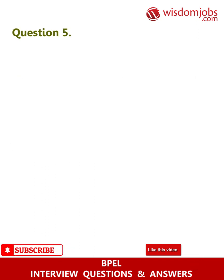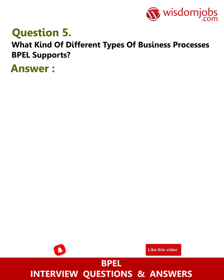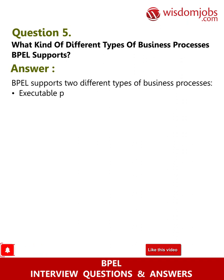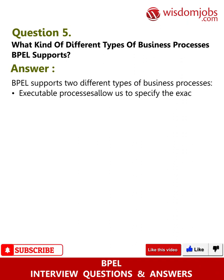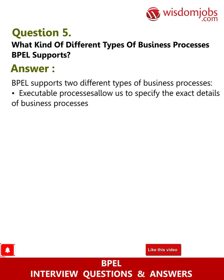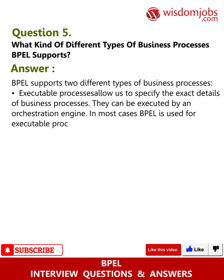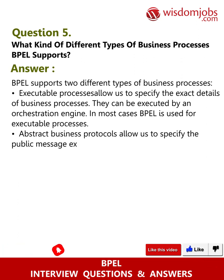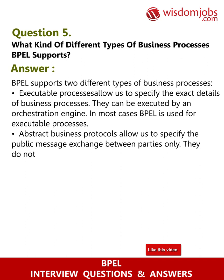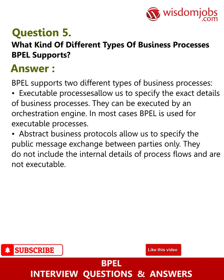Question 5: What kinds of different types of business processes does BPEL support? Answer: BPEL supports two different types of business processes. Executable processes allow us to specify the exact details of business processes; they can be executed by an orchestration engine. In most cases, BPEL is used for executable processes. Business protocols allow us to specify the public message exchange between parties only; they do not include the internal details of process flows and are not executable.